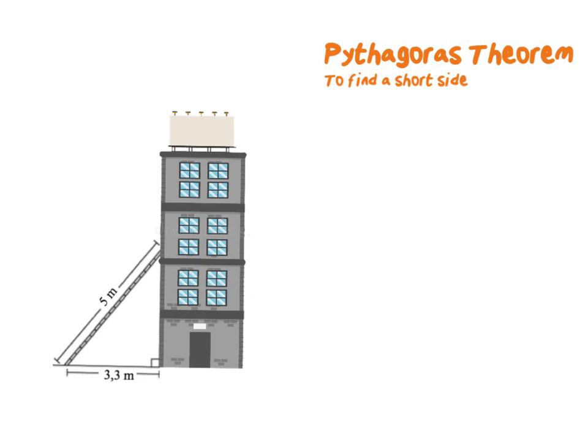My calculation will be 5 squared minus 3.3 squared. If you subtract it gives you 14.11, do not forget to square root that. If I do I get an answer of 3.76 meters high.